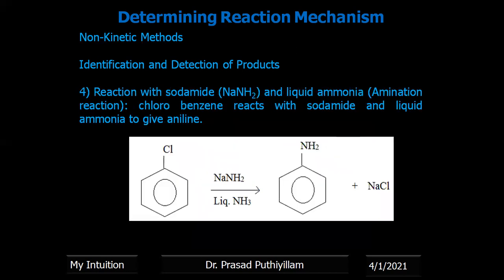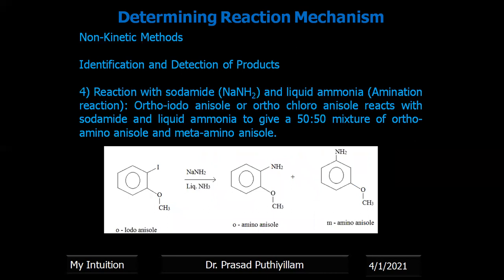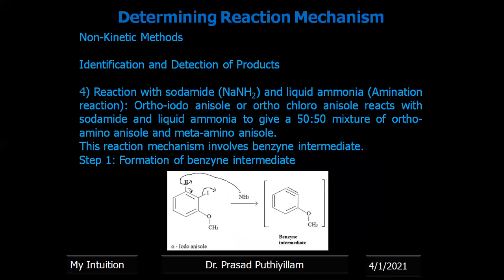Another example is the reaction of sodamide in liquid ammonia with chlorobenzene, called an amination reaction. Chlorobenzene reacts with sodamide and liquid ammonia to give aniline — here it is a simple substitution where chlorine is substituted with an NH₂ amino group. However, if ortho-iodoanisole or ortho-chloroanisole reacts with the same reagent — sodamide and liquid ammonia — it gives a 50:50 ratio mixture of ortho-aminoanisole and meta-aminoanisole. This is not a simple substitution reaction; the reaction intermediate here is a benzyne intermediate.